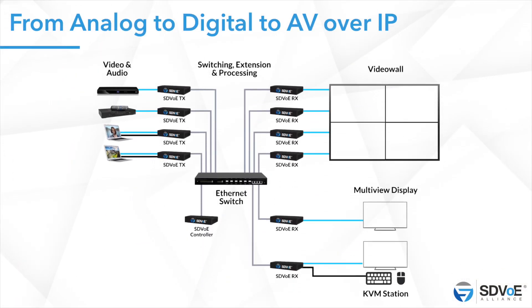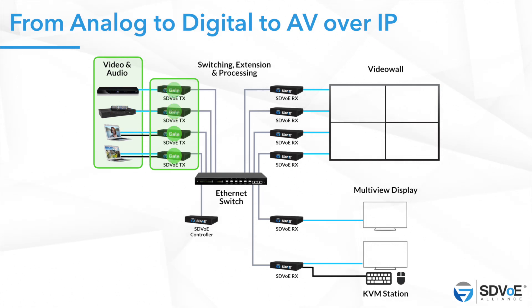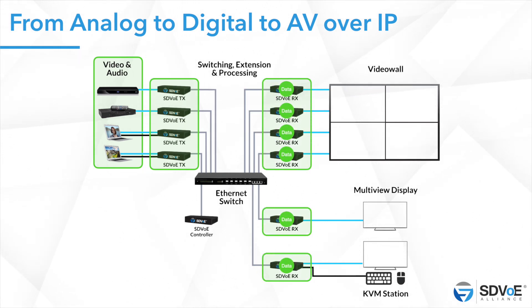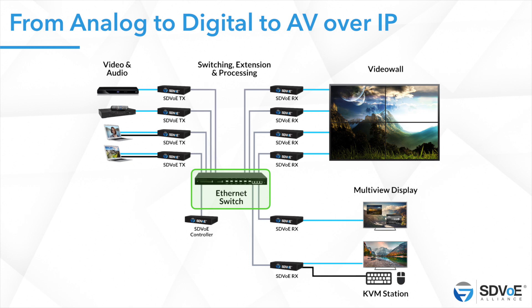What is AV over IP in general? SDVoE is probably one of the best applications of video over IP. As before in the analog or digital period, you have your sources on the left with encoders — previously known as transmitters — that packetize your AV sources into Ethernet packets. On the right you have decoders, also known as receivers, that reconstruct your AV on destination displays and speakers. What's new with AV over IP is that the fabric at the center is now the Ethernet network — the network backend runs your AV.